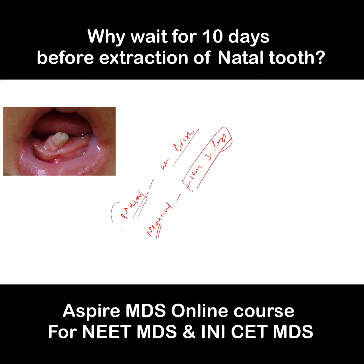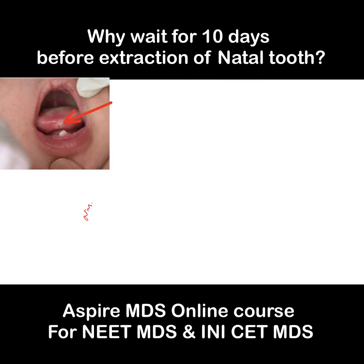Let's say we are talking about a natal tooth which is present in the child. This tooth is causing trauma to the tongue, and the tongue has ulceration. It will be called Riga-Fede syndrome.